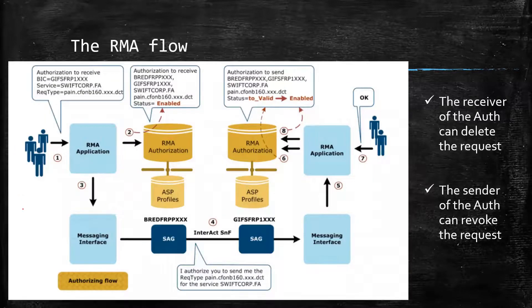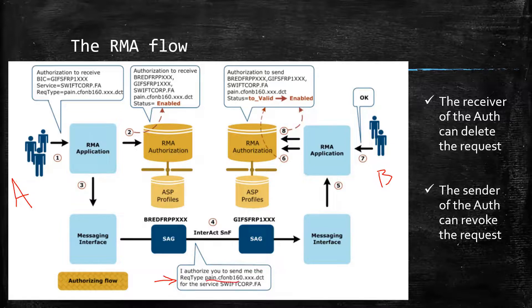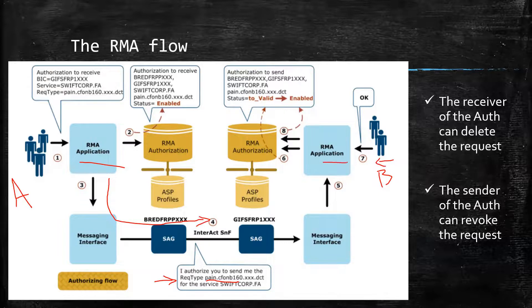Let's understand in more detail how these authorizations are created. Assume two counterparties, A and B. A wants to create a rule saying, 'I authorize you to send me this message.' So A sets up a filter specifying which messages it can receive from B — this is actually RMA+ since it specifies message types. The admin user logs into the RMA portal of Swift through a FileAct interface. This authorization goes to the RMA application of B. The admin user of B logs in and says, 'I'm fine with this rule — I know A and I'm willing to send messages to A.' Once B approves, it gets stored in the RMA database as validated, and all the rules get applied when message exchanges happen.